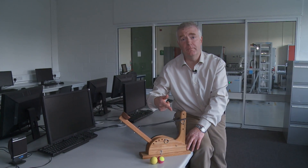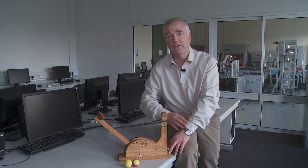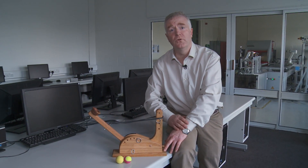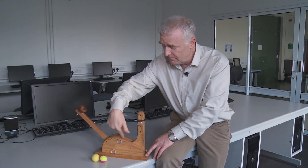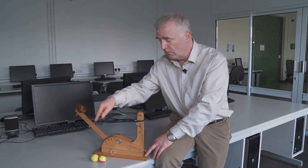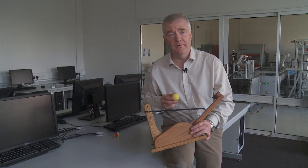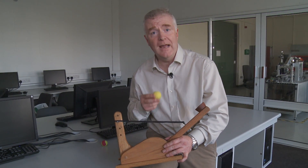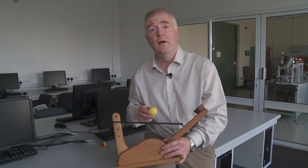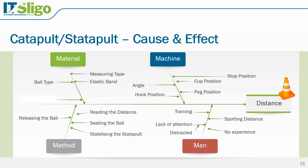In the case of the startapult, the response is the distance the ball travels. There are a number of factors which affect this response: the cup position, the pin position, the stop position, the start angle, and also the type of ball that we propel. We can consider the startapult to be a process, and the objective of this process is to achieve a specified target distance. We could attempt to achieve this target distance using trial and error, although this is particularly slow and there is no guarantee of success.